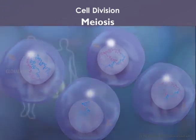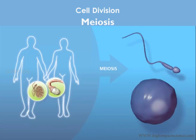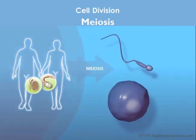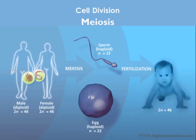The haploid daughter cells will specialize into either sperm or ova. These will fuse during fertilization to form a zygote and hence restore the diploid number of chromosomes. The zygote will divide by mitosis and grow into a child. So the child will get half of its chromosomes from the mother and half from the father.